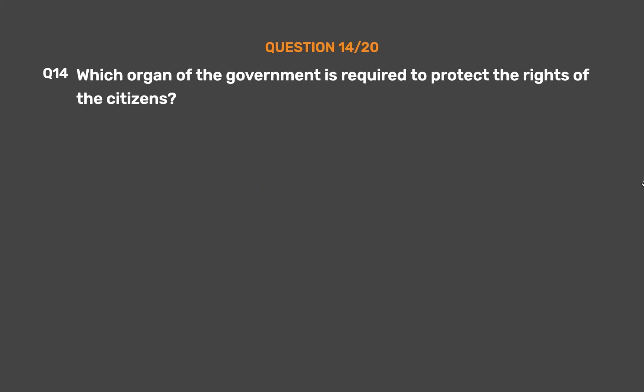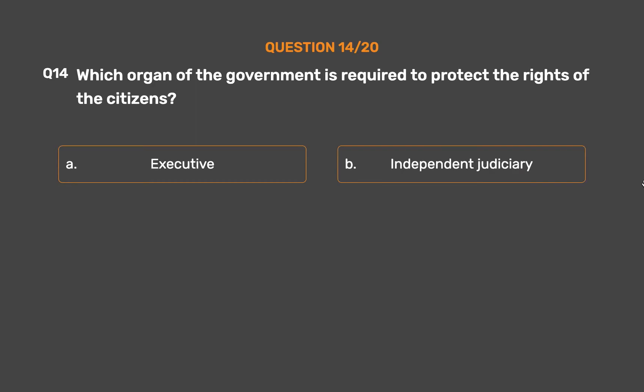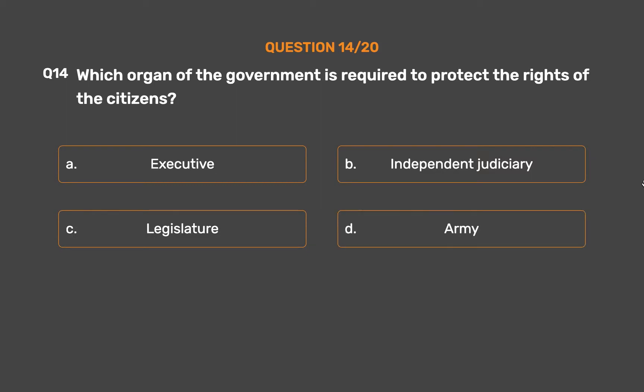Question number 14. Which organ of the government is required to protect the rights of the citizens? Option A: Executive. Option B: Independent judiciary. Option C: Legislature. Option D: Army.